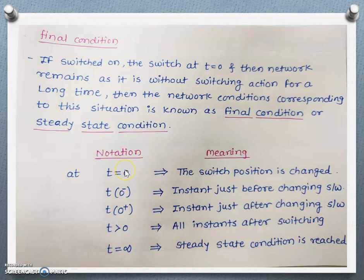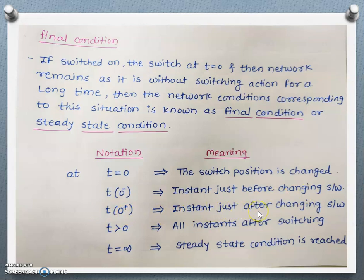There are some notations in this concept. When we write t=0, that means the switch position is changed. t=0⁻ indicates the instant just before changing the switch. t=0⁺ indicates the instant just after changing the switch. t greater than zero indicates all instants after switching, and t=∞ indicates that the steady state condition is reached.